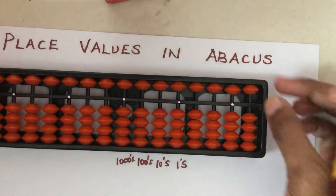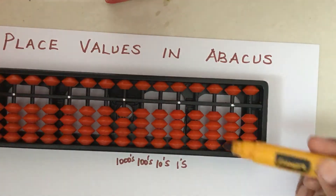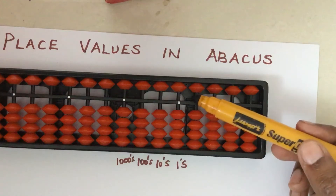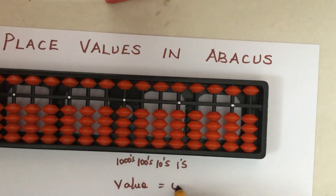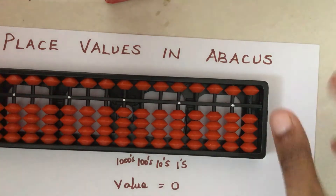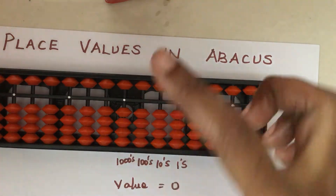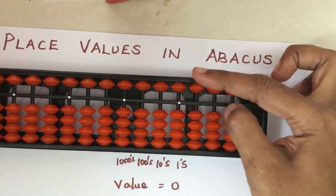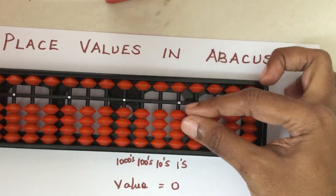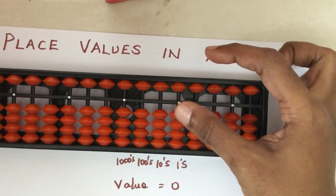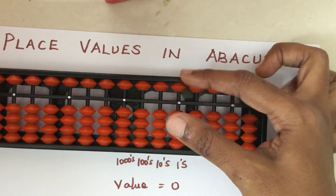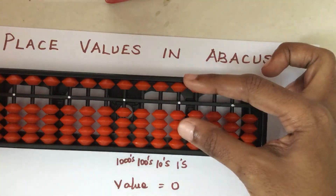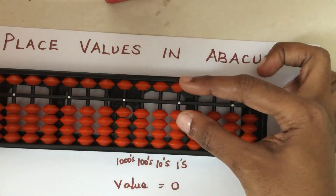When there are no beads touching the beam, it means the value is equal to zero. Always use the thumb finger and the four finger for moving the beads in the abacus. The thumb finger should always move the lower beads and the four finger should move the upper beads. Now let us read the different values.